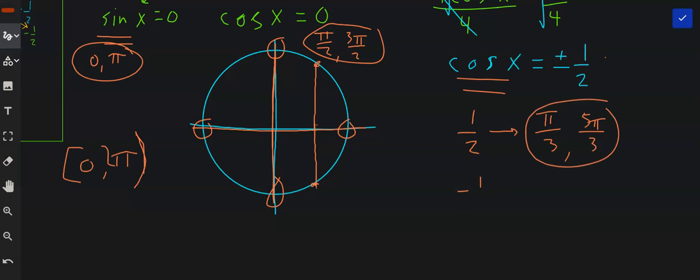And for the negative 1 half version, which would be on the other side, we would get 2 pi over 3 and 4 pi over 3. 8 different answers.